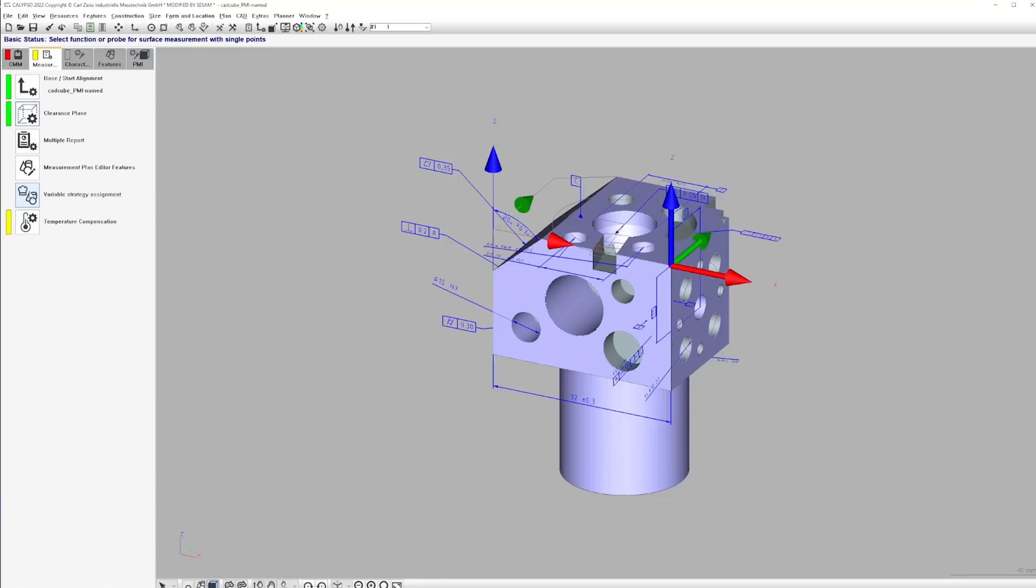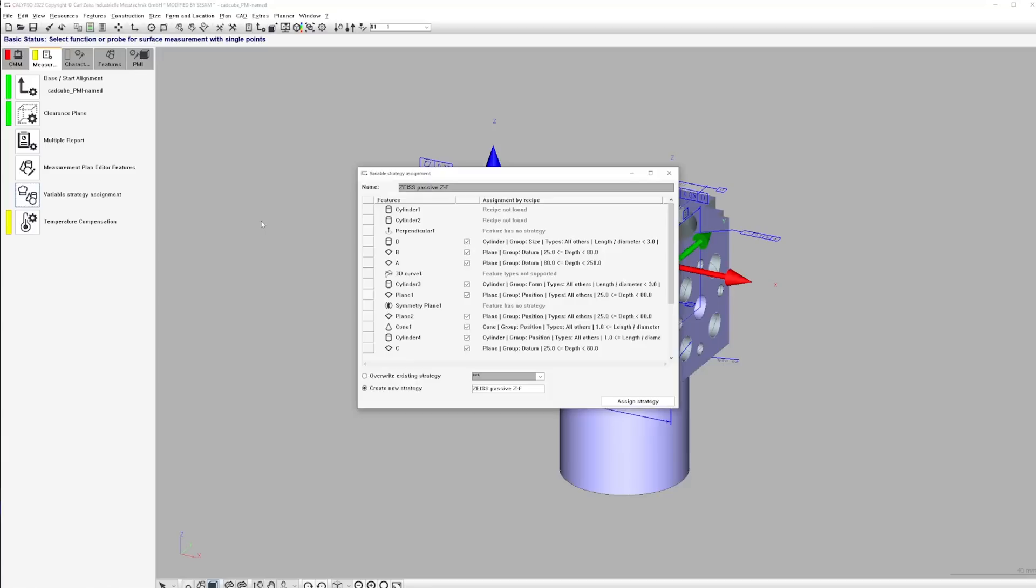Here we go to the variable strategy assignment, select the strategy that we want to use and also select whether you want to apply that for the whole measurement plan or only for single features. Now we select that for the whole measurement plan.